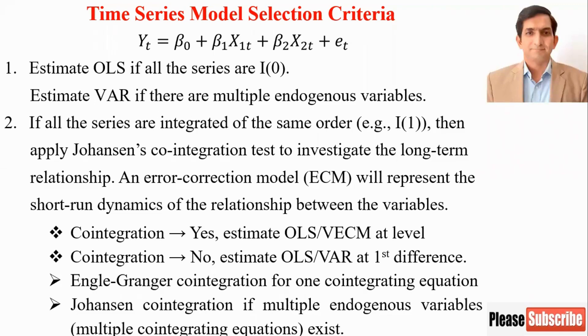Case number two: if all the series are integrated of the same order I(1), meaning that a non-stationary series becomes stationary at first difference, then you apply Johansen cointegration to investigate the long-term relationship and apply the error correction model to see the short-term dynamics of the relationship between variables.